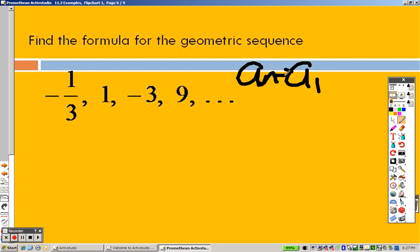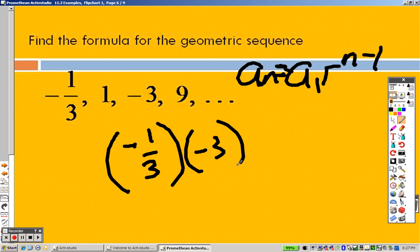So according to the formula, it equals a sub 1, r to the n minus 1. The first term is negative 1 third. That's the first term. r is negative 3 to the n minus 1. So there's that one.